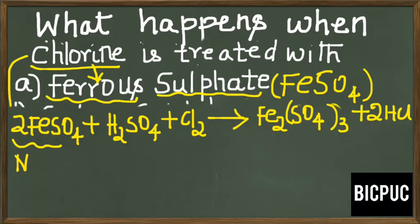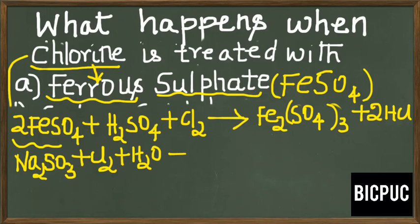Again, sodium sulfite formula Na2SO3 is treated with chlorine water, Cl2 plus H2O. What happens?